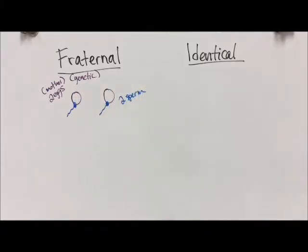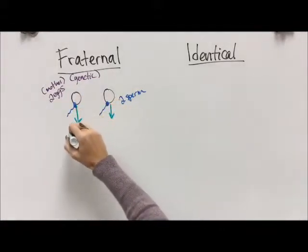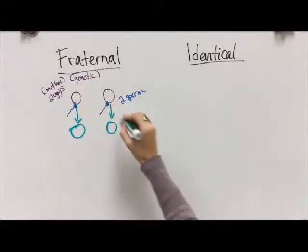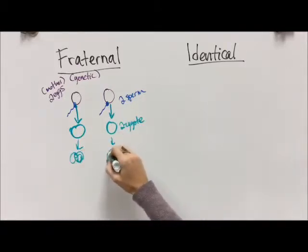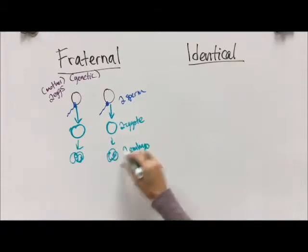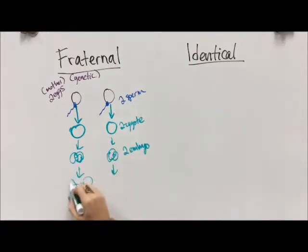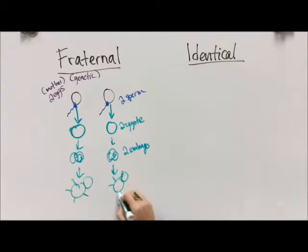We get two eggs that get fertilized by two different sperm. They then grow into, or become, two separate zygotes with two completely different pieces of information, two completely separate embryos, and then two different fetuses.